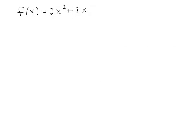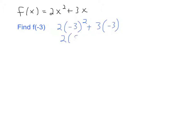Now let's look at a different function: f of x equals 2x squared plus 3x. Let's find f of negative 3. The negative 3 inside the parentheses is the input, so we substitute it in for x: 2 times (negative 3) squared plus 3 times (negative 3). Negative 3 squared is 9, so we get 2 times 9, which is 18, plus negative 9. So the answer is 9.